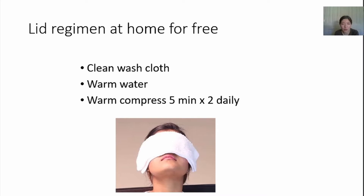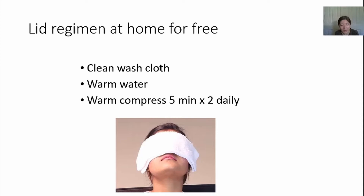Here is what you can do at home — a lid regimen, free of charge. The lid regimen refers to warm compress together with the eyelid scrub using just a clean towel. You soak your dedicated clean towel with warm water and do the warm compress on your eyes for five minutes, twice daily. The heat from a towel cools down fairly quickly — maybe after a minute or half a minute — so you need to reapply heat to the towel. That's why using a microwaveable heat mask can be more convenient, but if you want to save money you can do it with a towel. Afterwards, scrub gently along your eyelashes at the lid margin to remove the debris.